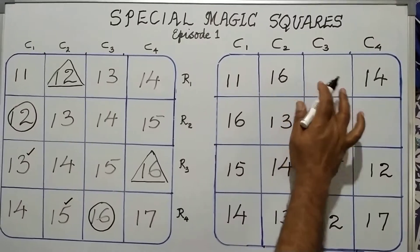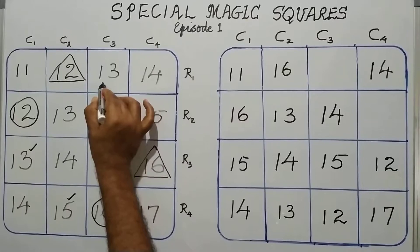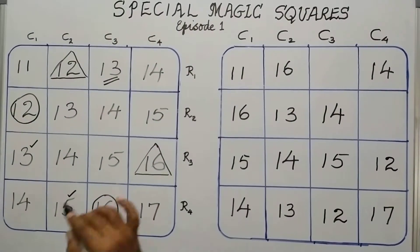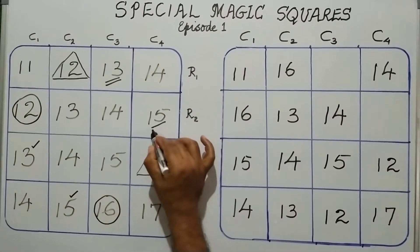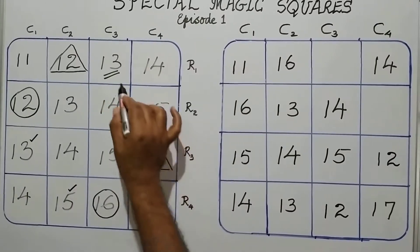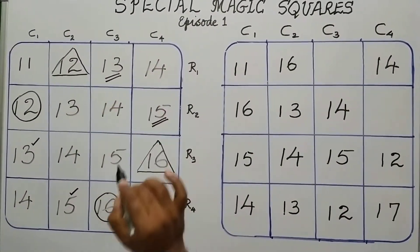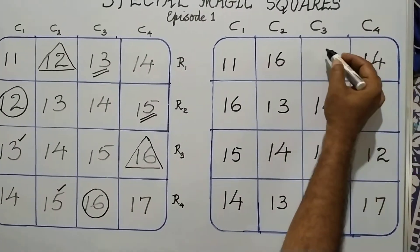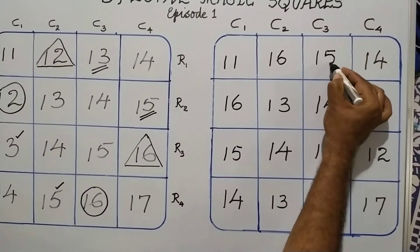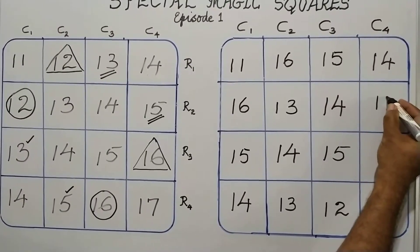Now, only two more grids are to be filled up. Column 3, first element, that is 13. Column 4, the second element, that is 12. I have shown those two elements by underlining them. These two elements are interchanged. So, in column 3, the first element will be 15. And in column 4, the second element will be 13.